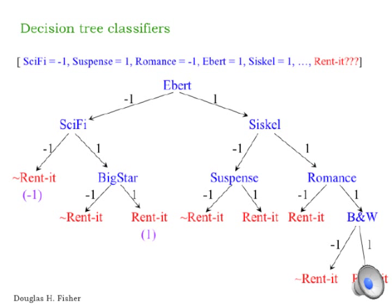Here's an example of a movie description that we might want to classify using this decision tree. The variables we use to represent a movie can vary, but some obvious ones might be the genre of the movie: whether it's sci-fi, whether it's suspense, whether it's romance.